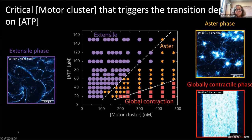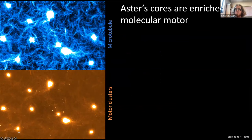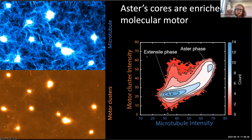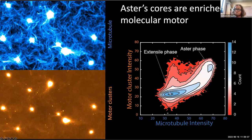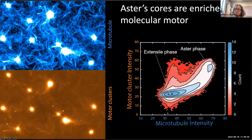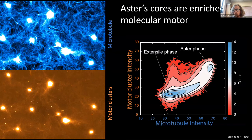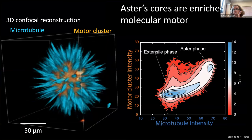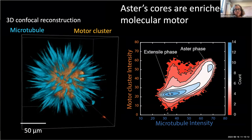With dual labeling of both microtubules and motor clusters, we notice that the cores of the asters are enriched in molecular motors. Looking at each pixel — measuring both motor channel intensity and microtubule channel intensity — you see that in the aster phase you're enriched in motor clusters. This enrichment has been a defining feature of microtubule-based asters, particularly well characterized when you have end-accumulating motors. A 3D confocal reconstruction confirms that the core of the aster is enriched in motor while the outer layer is not.